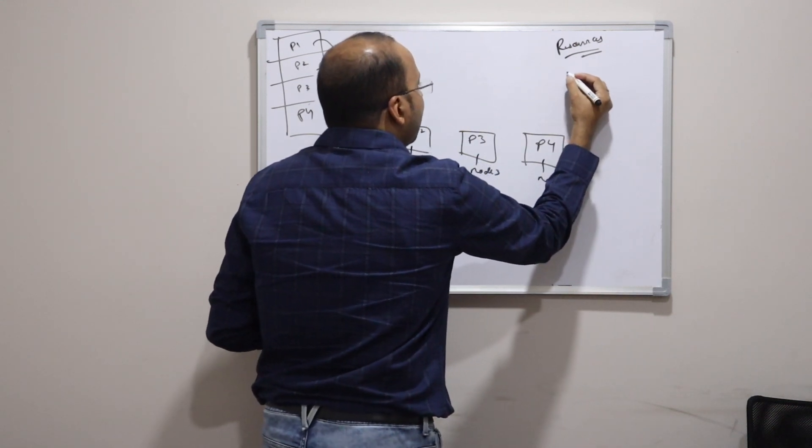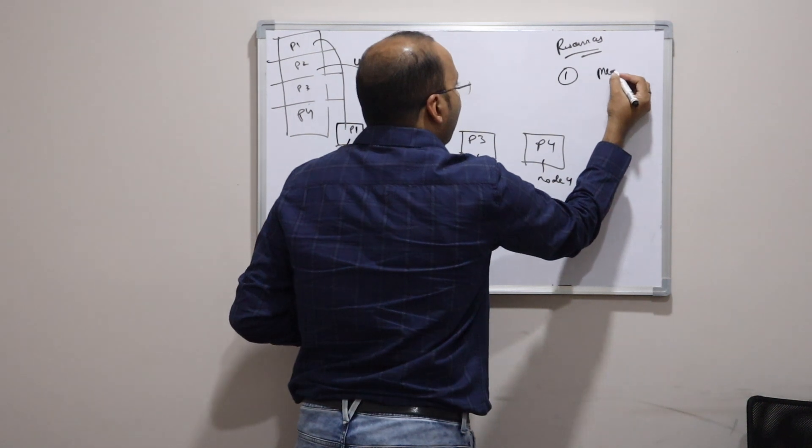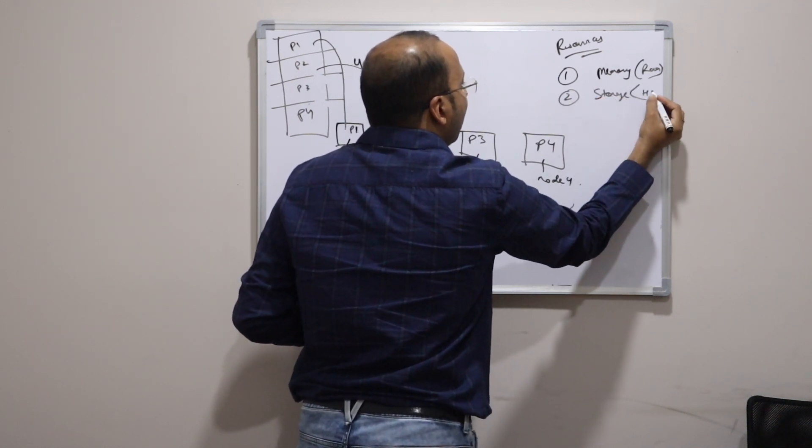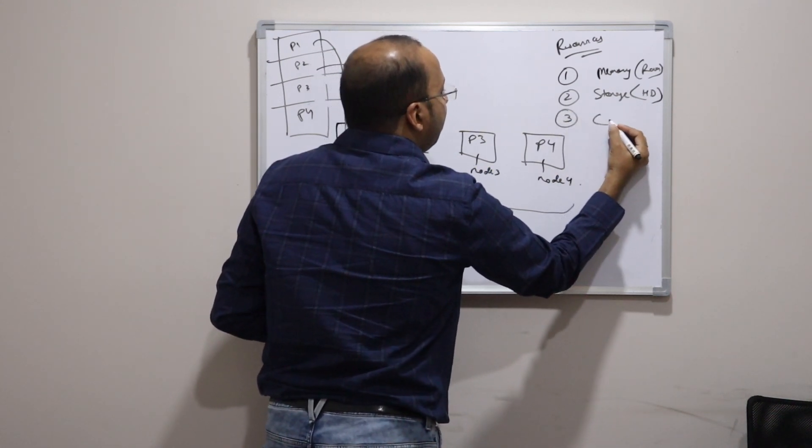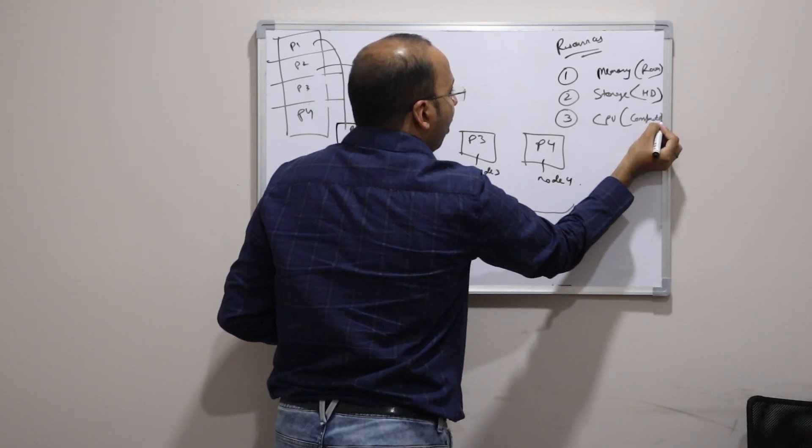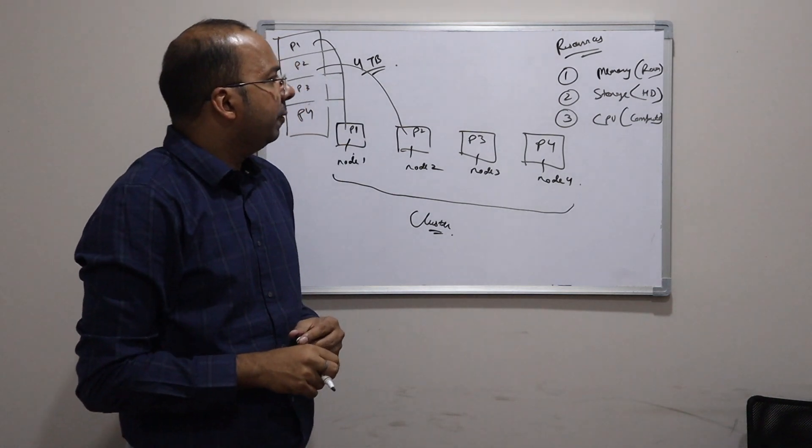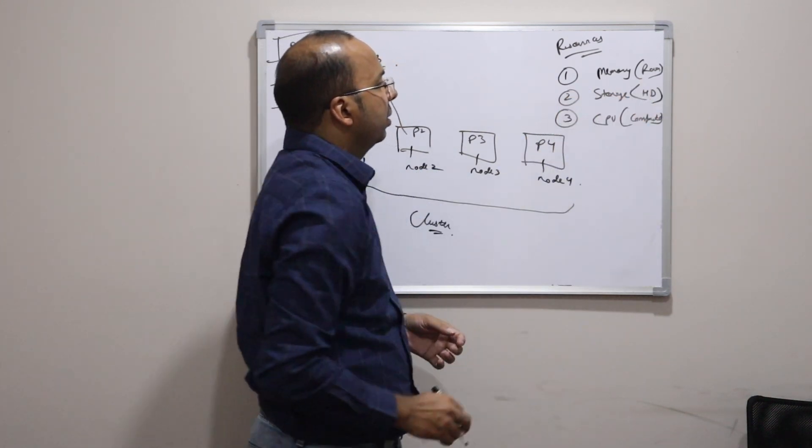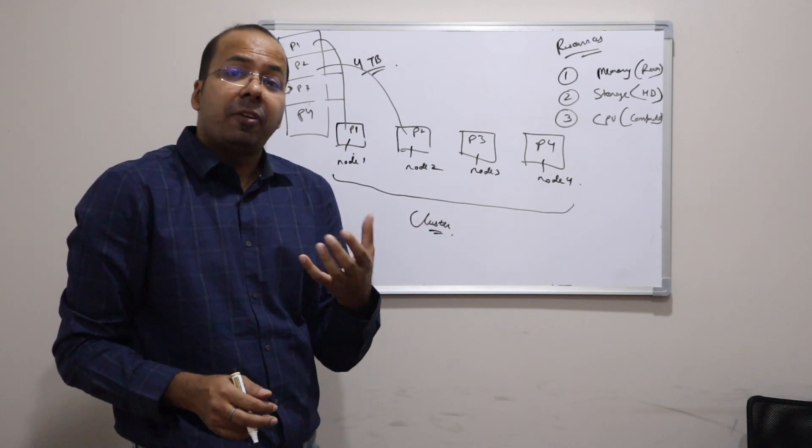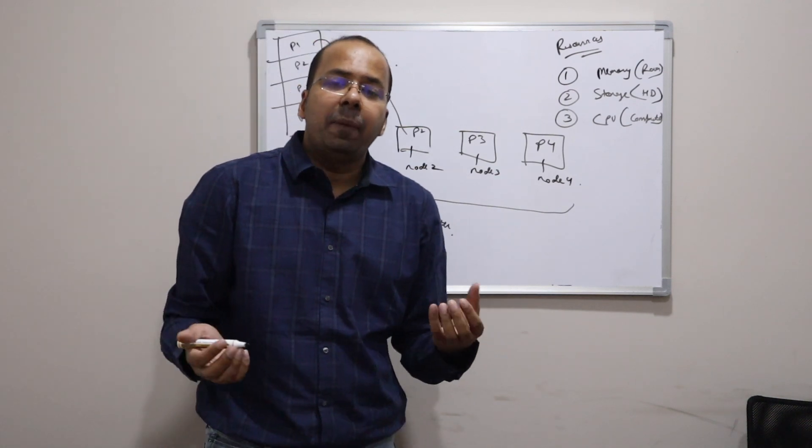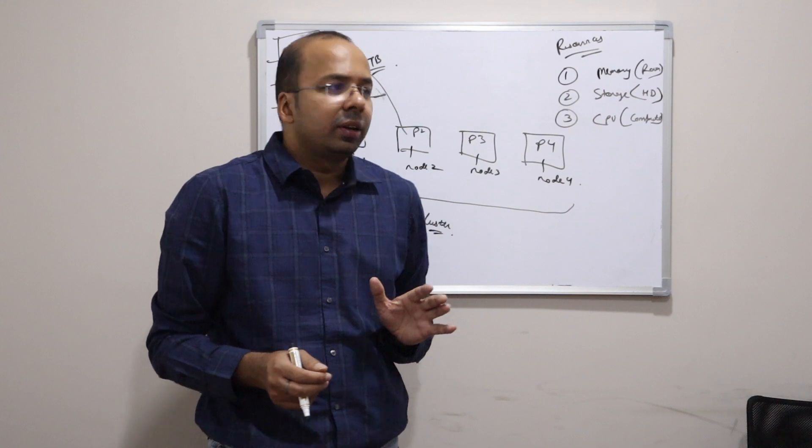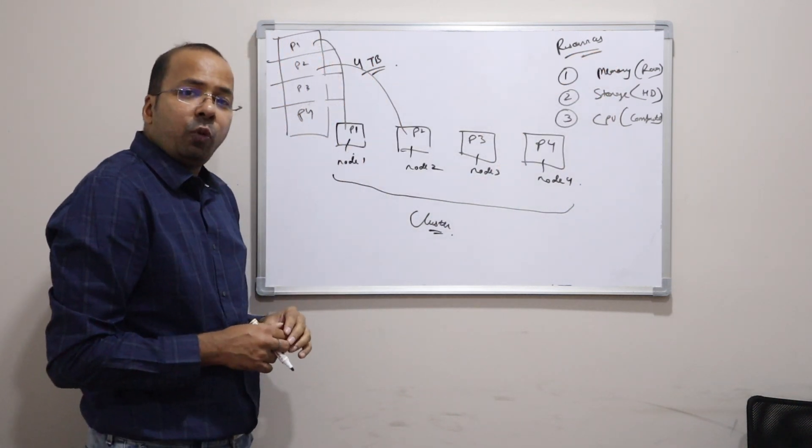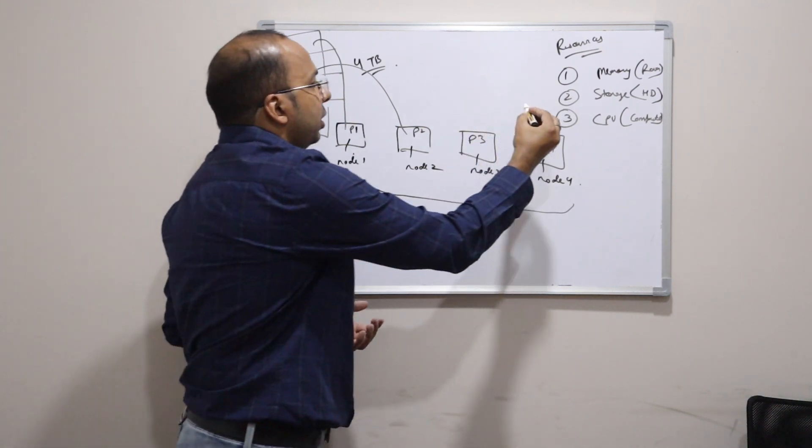So each machine has resources and 3 kinds of major resources. Number 1 your memory which is nothing but RAM. Number 2 storage which is nothing but hard disk. And number 3 CPU which is nothing but the compute power. For example consider it with your laptop. You might have a laptop with 8 GB RAM. So this is nothing but the memory. You might have a laptop with 1 TB of hard disk. That is nothing but the storage. And you might have a laptop with quad core processor, Intel i3 or whatever. So that is nothing but the CPU. So all these machines have all these components. Now which component is required for processing your CPU.